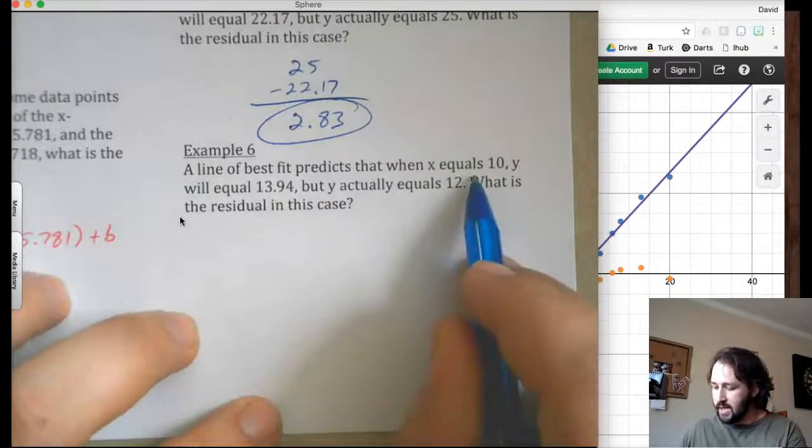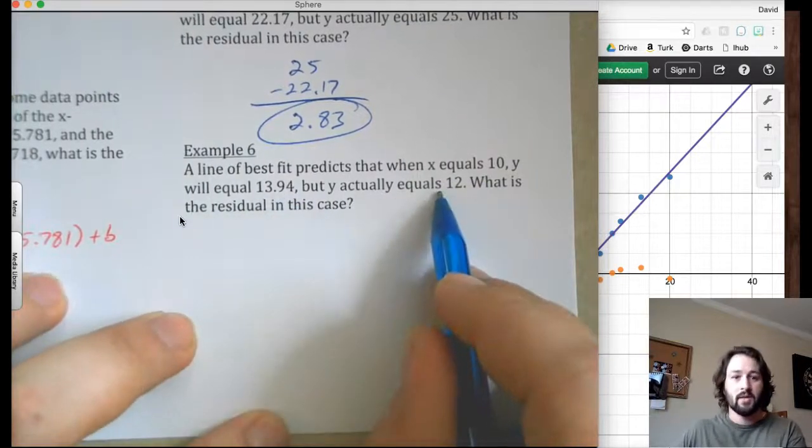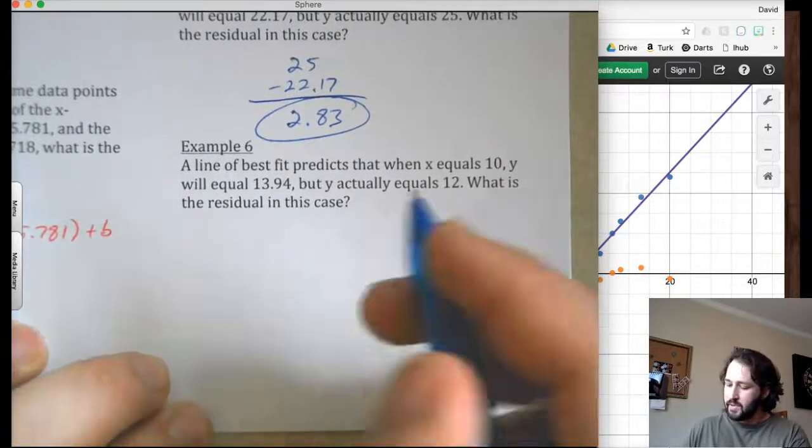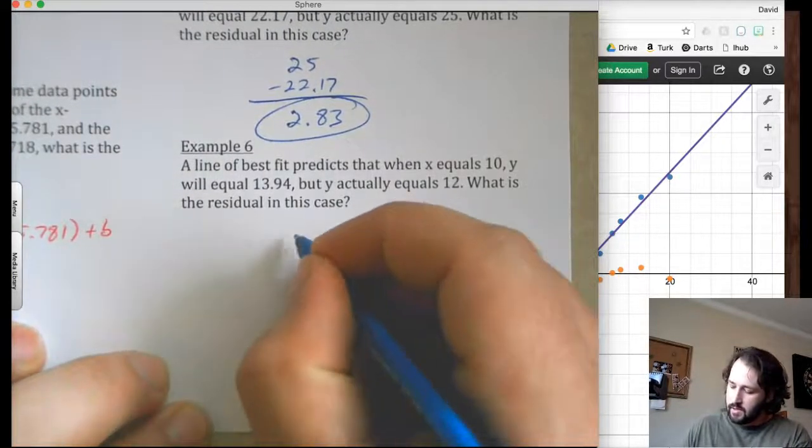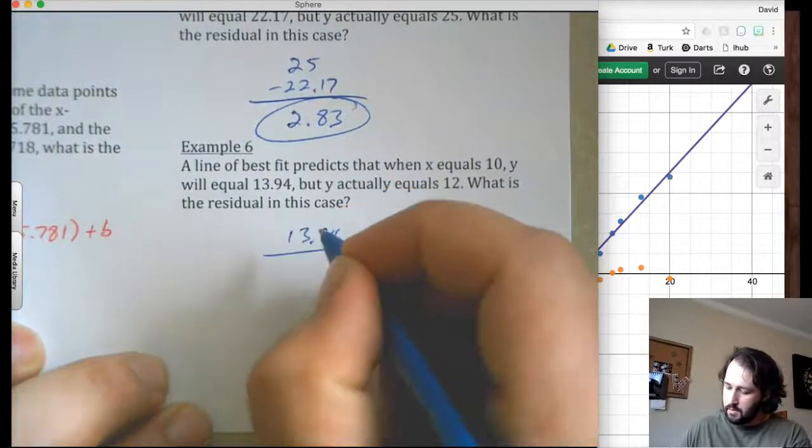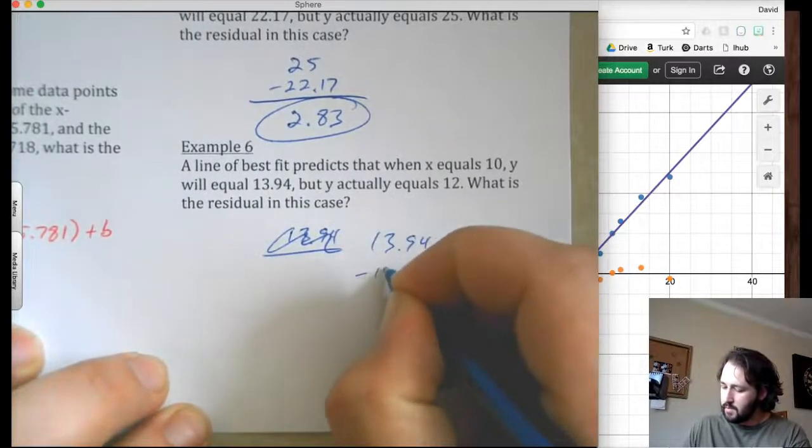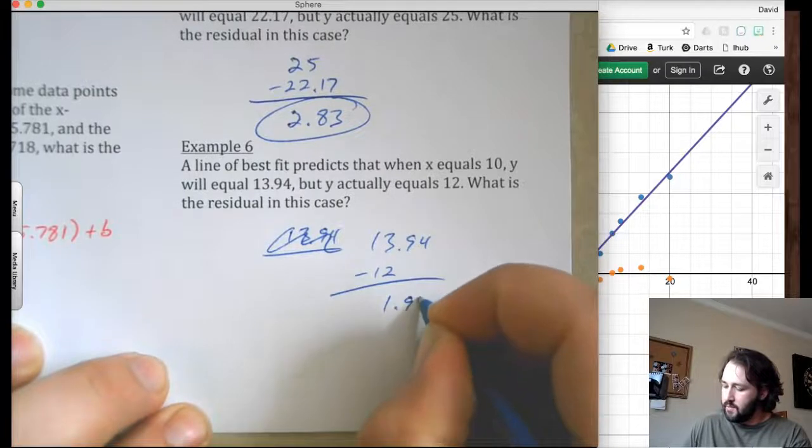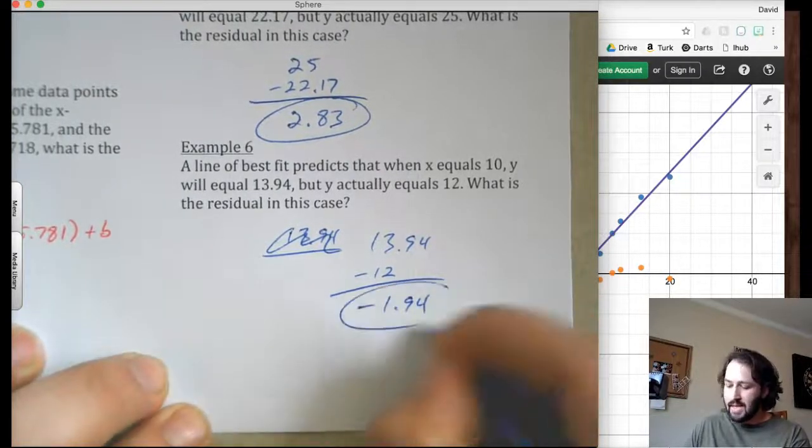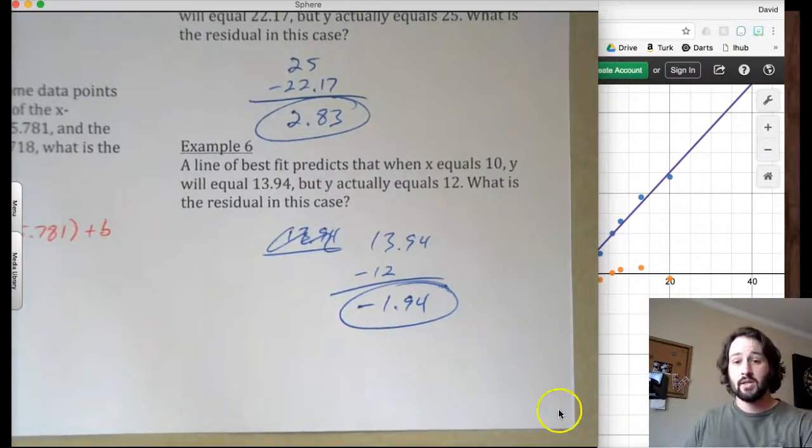Line of best fit predicts when x is 10, y is 13.94, but y is actually 12. So in this case, it's below. So y is below. So if I do 13.94 minus the 12, that will give me 1.94, the difference. But since it's below, this needs to be a negative residual because we're actually getting something that is below what it's supposed to be.